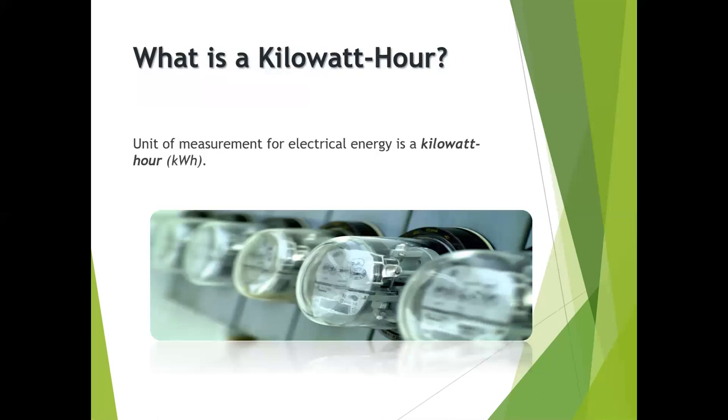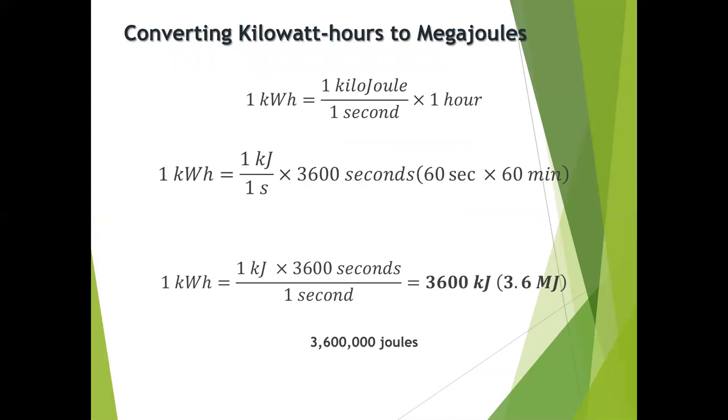By definition, a kilowatt hour is a unit of measurement for electrical energy. When we want to convert kilowatt hours to megajoules, we take our kilowatt hour number and recognize that it equals one kilojoule per second multiplied by an hour. One hour equals 3600 seconds, so in essence one kilowatt hour equals 3.6 megajoules.